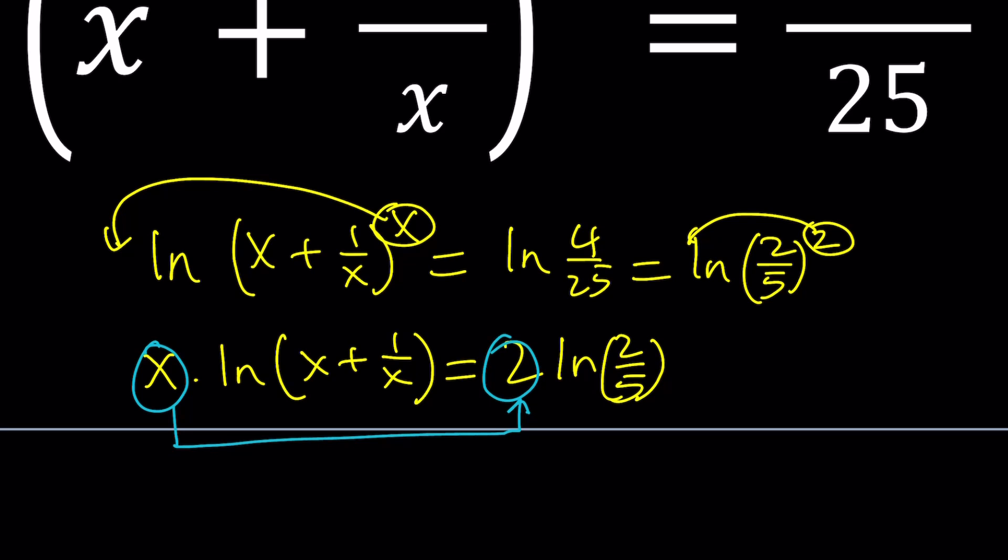That's actually not the case, because if x is 2, then we're going to have 2 plus 1 half, which equals 5 halves. We don't get 2 fifths. But we get the reciprocal, so that should mean something.